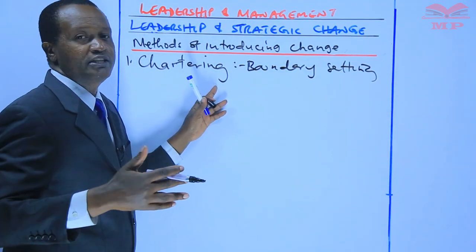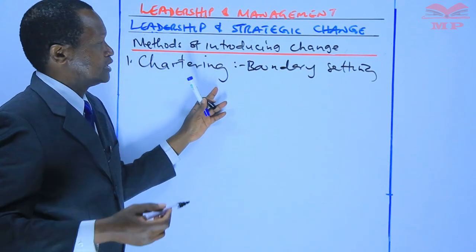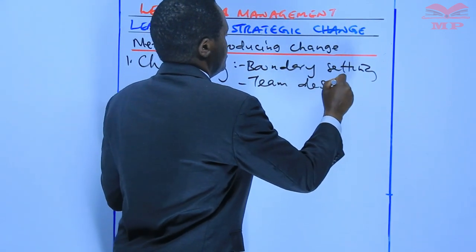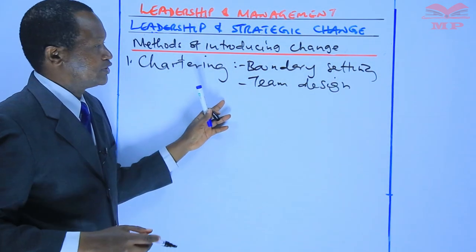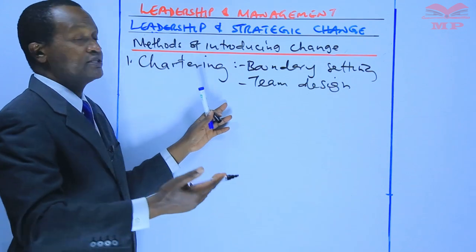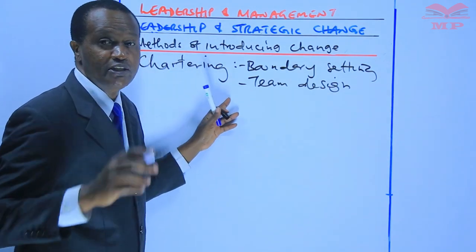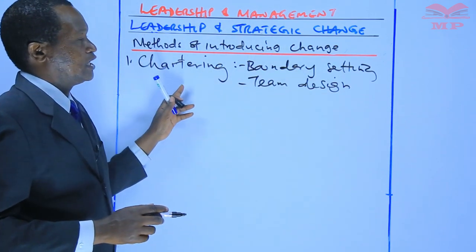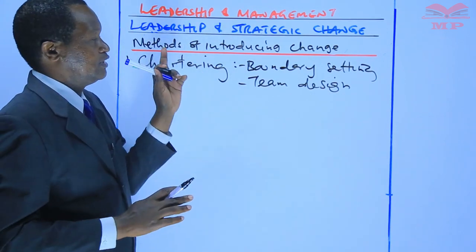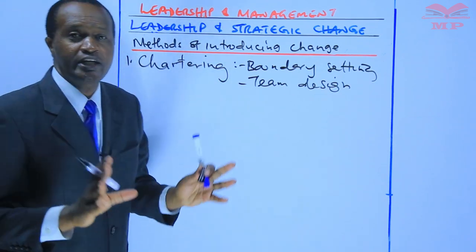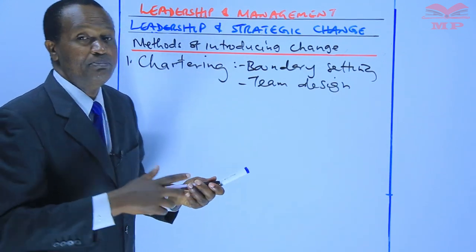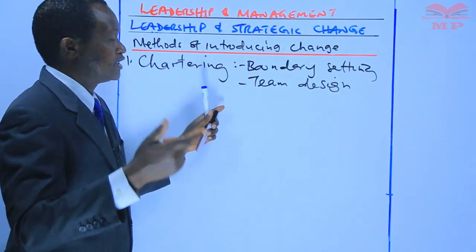Boundary setting is just the definition of the scope of the change program. The change manager should also do what we call team design. Team design is the definition of the roles, the responsibilities, the norms, and ground rules for teamwork. Because change can only be effective if there is teamwork — no single individual can implement change. For change to be successful, there has to be a team working on the implementation, with clearly defined roles, responsibilities, and ground rules under which the team will operate.